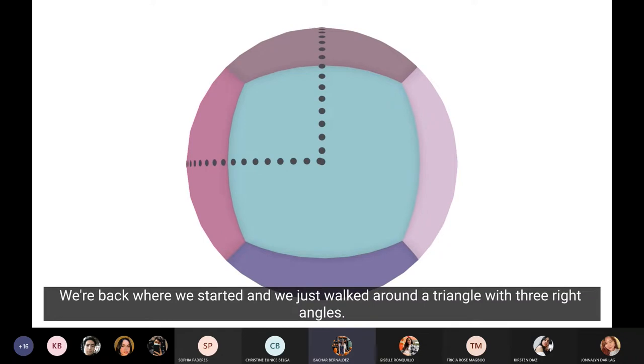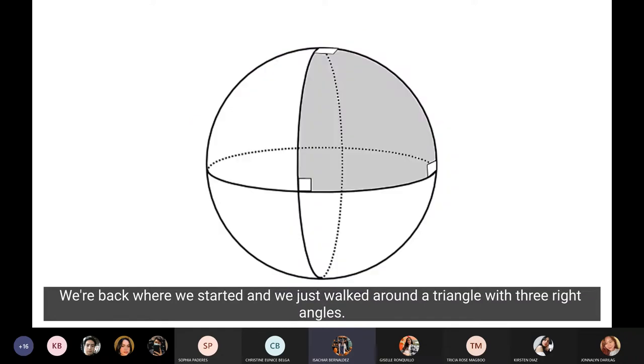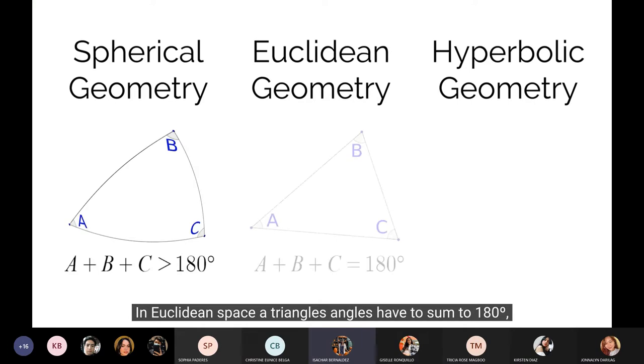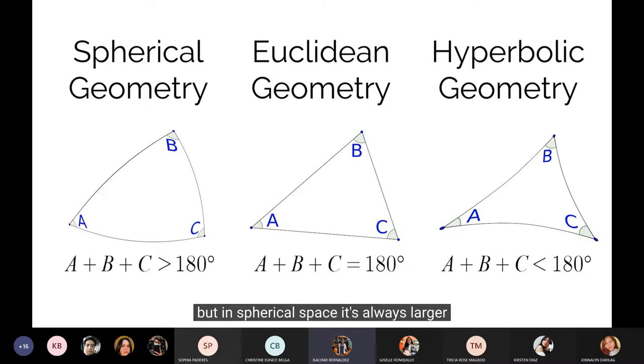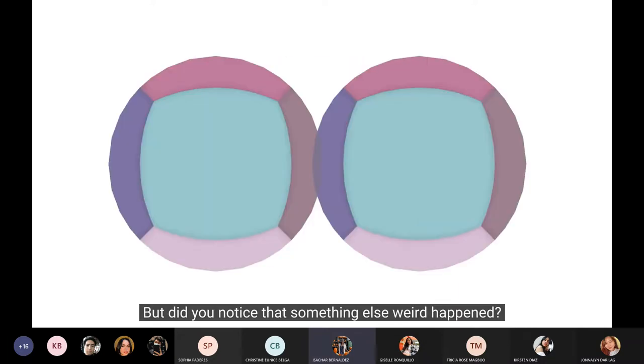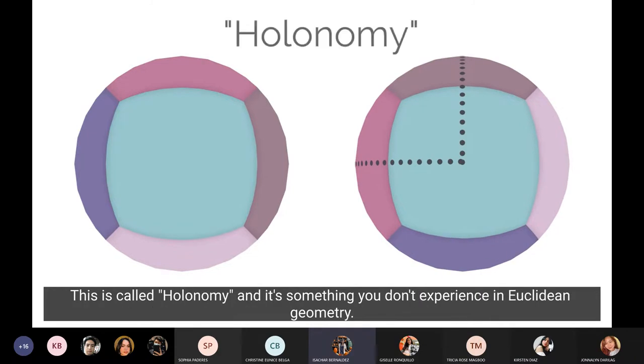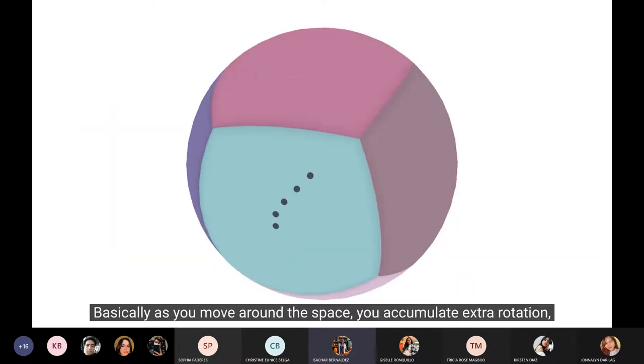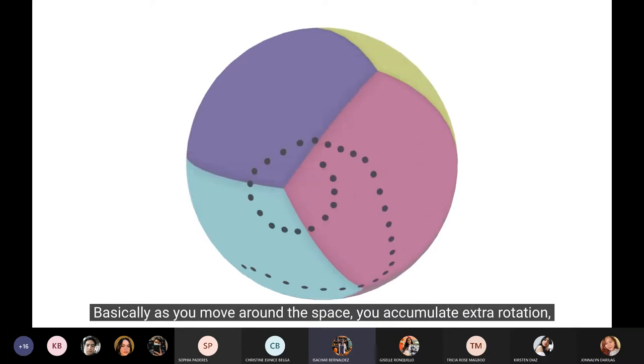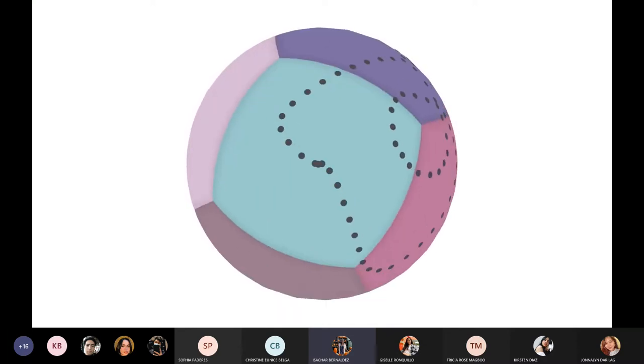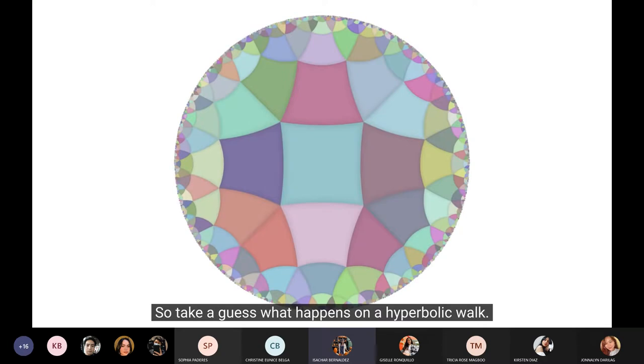We're back where we started. And we just walked around a triangle with three right angles. In Euclidean space, a triangle's angles have to sum to 180 degrees. But in spherical space, it's always larger. But did you notice that something else weird happened? We walked around without ever changing our view direction. But when we came back to the starting point, everything's been rotated 90 degrees to the left. This is called holonomy, and it's something you don't experience in Euclidean geometry. Basically, as you move around the space, you accumulate extra rotation, even if you never change the direction you're facing.